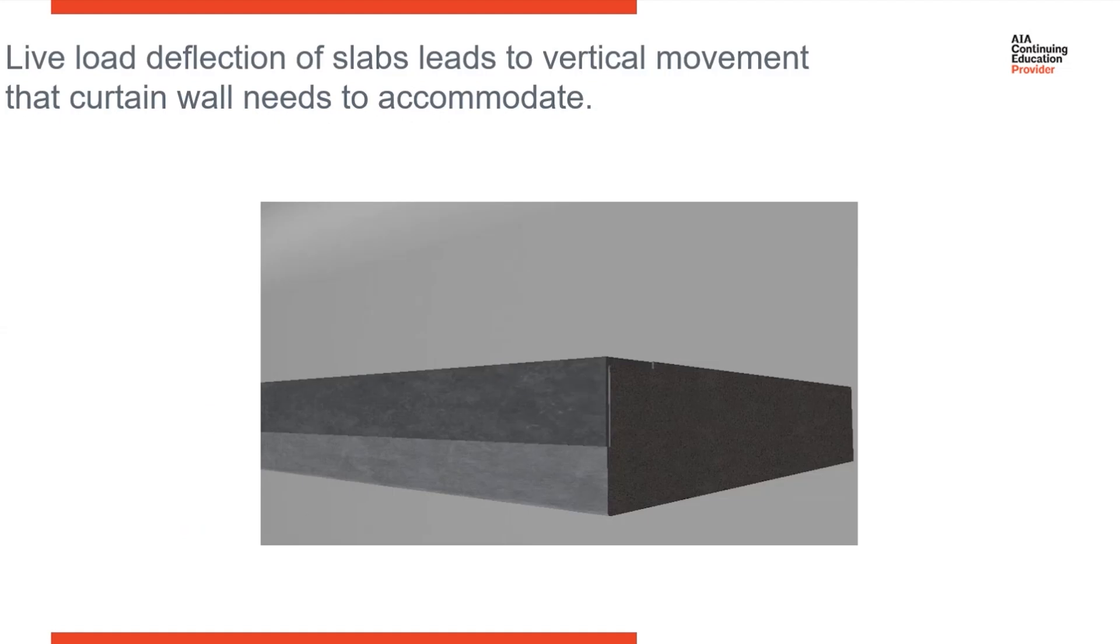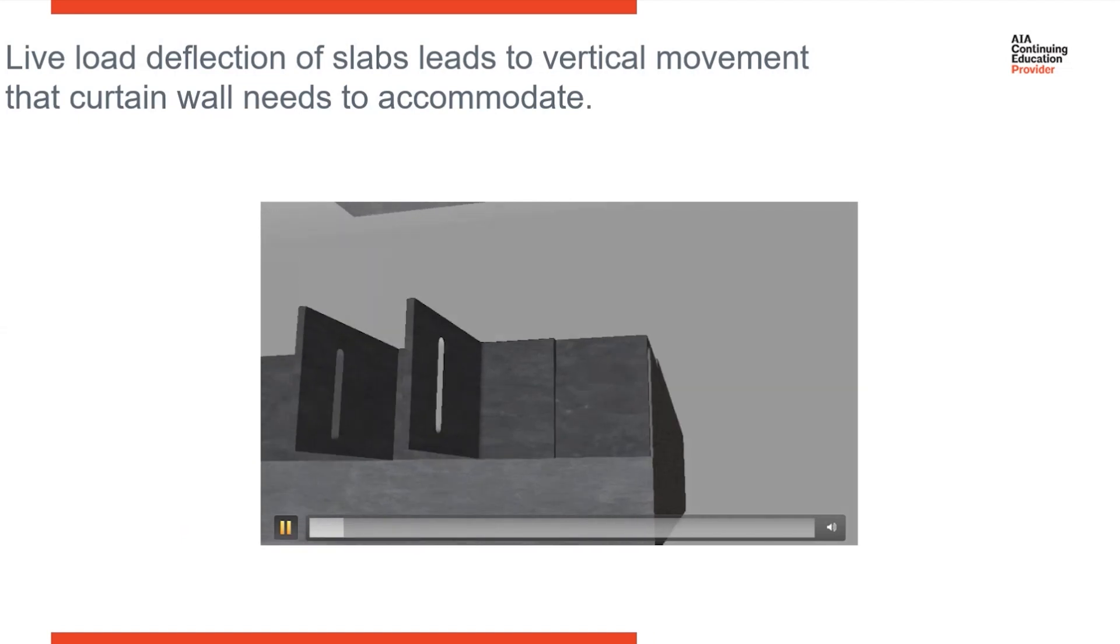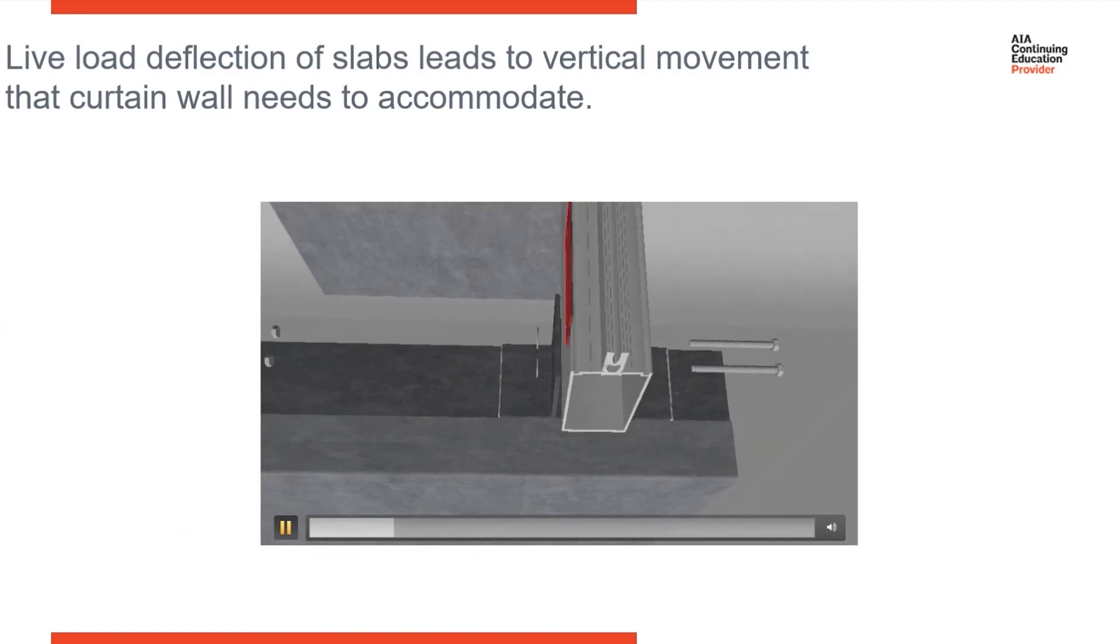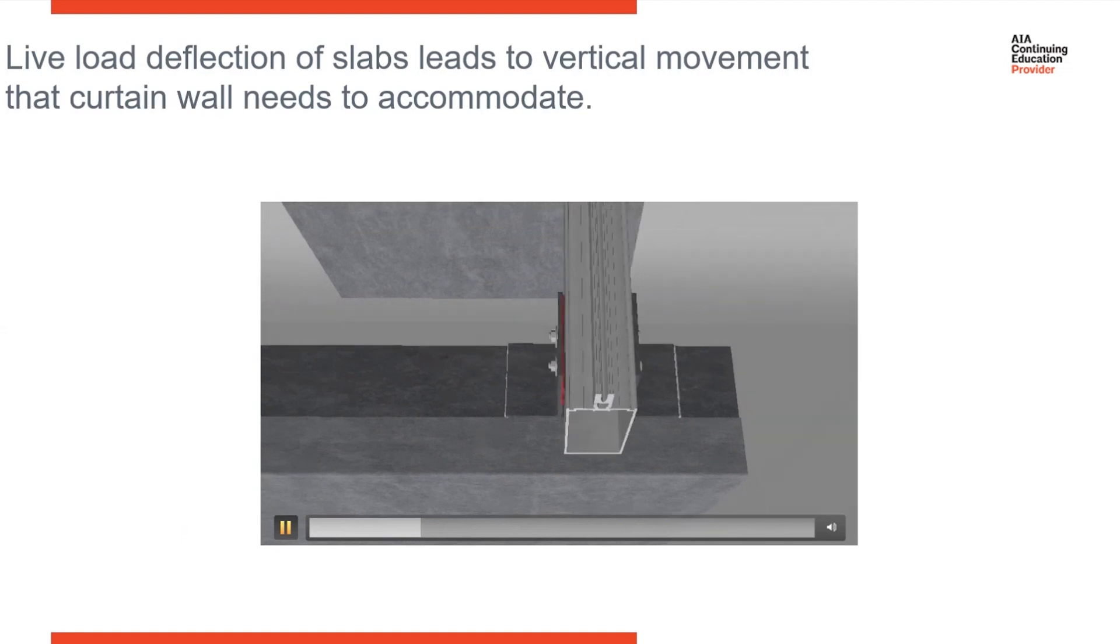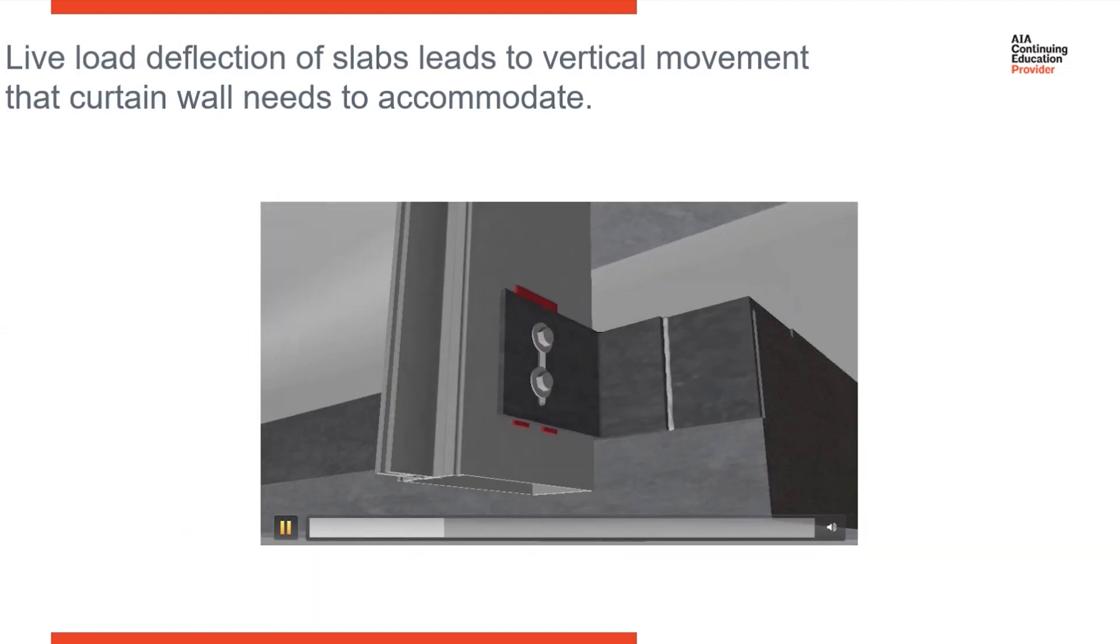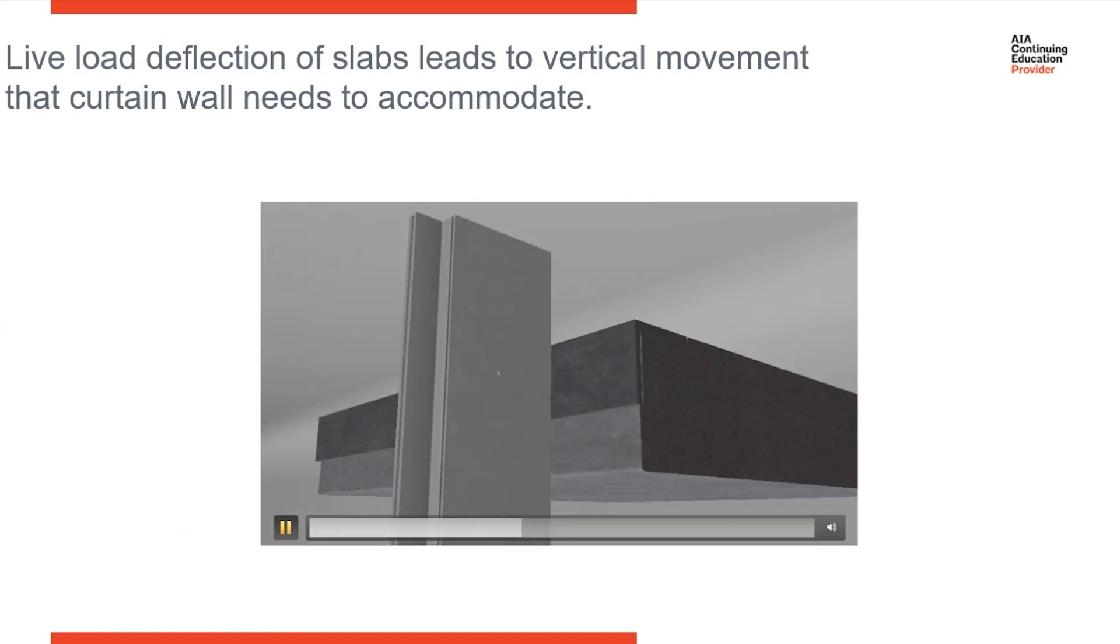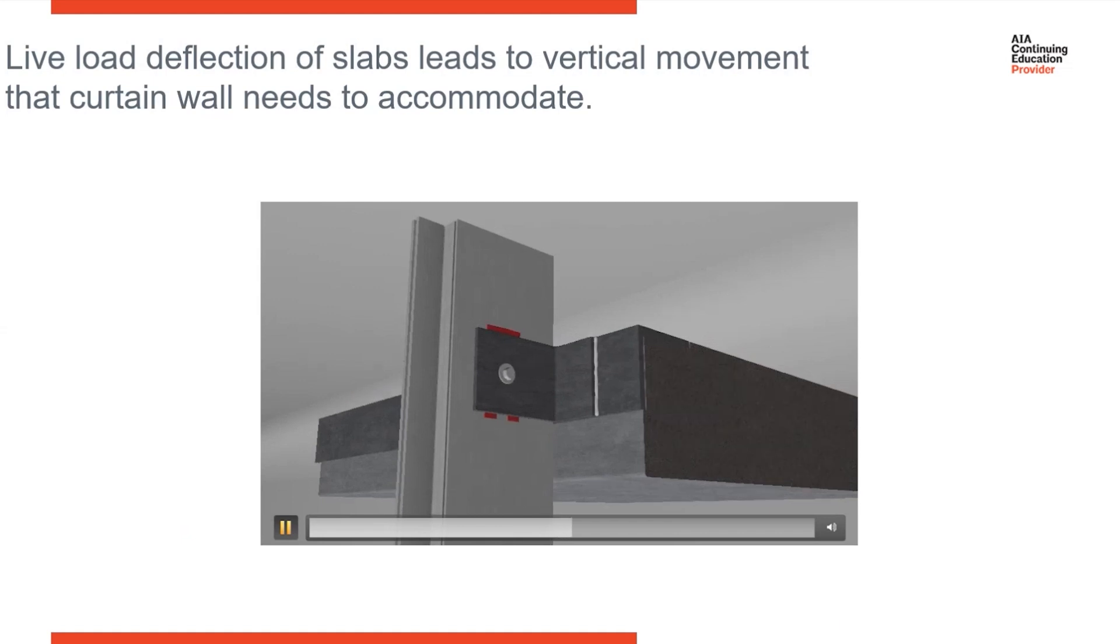This is a video that shows anchoring of a stick curtain wall system. First you have your wind-load anchor being installed. Notice that this anchor is slotted, so this allows the mullion to move up and down. Next, you have your dead-load anchor. It looks like this anchor is not slotted, so it does not allow for vertical movement.